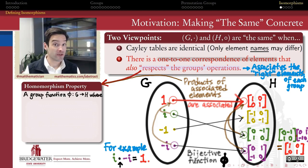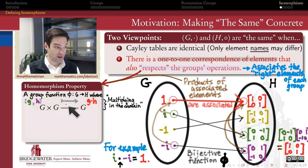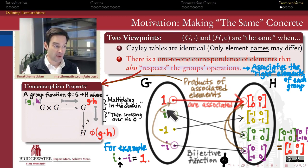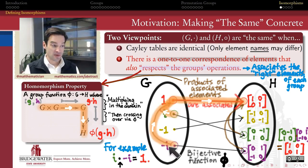In other words, if I first apply the operation of G and then cross over using my function phi, I should get the same result as if I first cross over using phi and then apply the operation in H. It doesn't matter whether I do my multiplication in the first group or in the second group — the result is going to end up being the same. That's what it means to respect the operation of a group, and it's a property we call the homomorphism property for a function. So, a function phi from G to H has the homomorphism property if the following holds. If I take two elements g and h of the group G, and I multiply them using the dot operation, I get an element g·h. If I then apply phi to that product — crossing over with phi after I multiply — I get phi(g·h), which is an element in H by closure and the definition of phi.